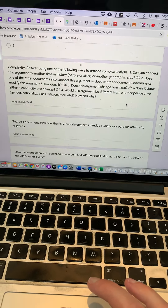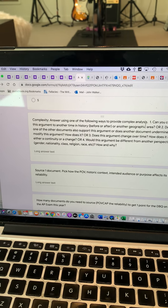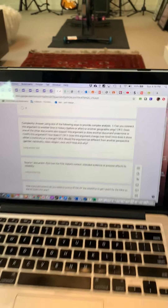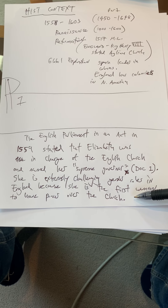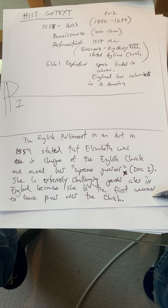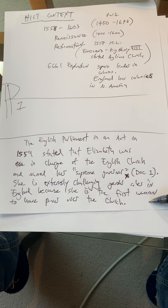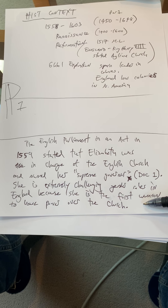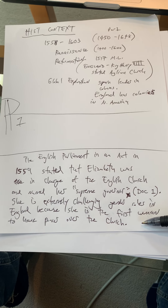For complex analysis, you can connect the argument to another time or geographic area. For example, in Catholic countries such as France or Spain, only men were allowed to be priests and women were not considered to have control over the church — so this context makes Elizabeth's role even more extraordinary by comparison.